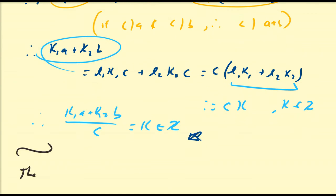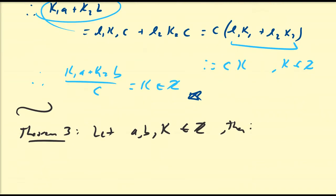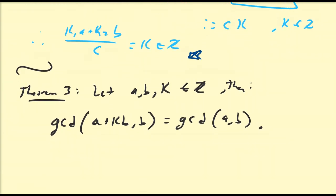The next theorem, Theorem 3, may seem a little strange at first. We're going to let A, B, and K all be integers, and we're going to focus on the greatest common divisor. The theorem states that the greatest common divisor of A plus K·B and B is just equal to the greatest common divisor of A and B. This theorem is going to be extremely useful for another proof we're going to do soon.